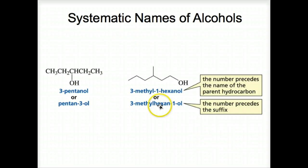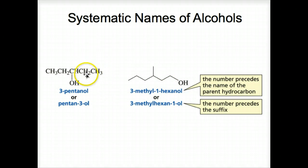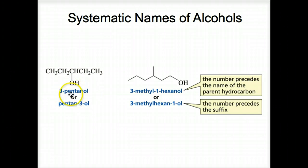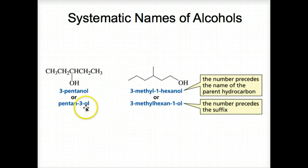Here are some systematic names of alcohols in both condensed and bond-line notation. You can see 3-pentanol — count one, two, three from either direction, it's still three. Also, the number three can be placed directly in front of the -ol suffix to explicitly show where the OH is, giving pentan-3-ol. More commonly written as 3-pentanol, but both mean the same thing. Another example: 3-methyl-1-hexanol — the OH is on number one carbon, and the methyl is on number three. We can also move the number one in front of the -ol suffix.